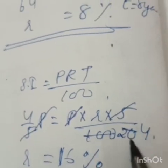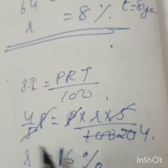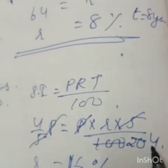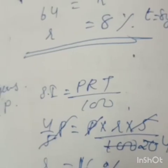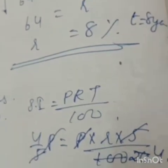Simple interest equals 4 by 5 of the sum. Time is 5 years. Put in the formula and cut: you will get rate equal to 16%. Dividing and multiplying through, the rate is 16%. I hope everybody is clear.